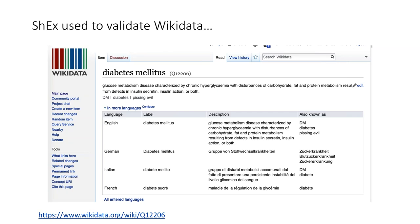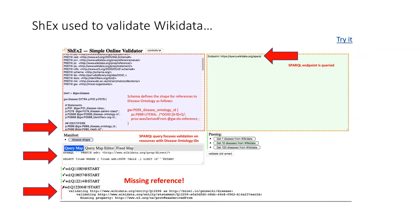Here is a screenshot from the online validator — clicking the 'try it' button takes you to this screen. It has a schema that defines the shape for references to the disease ontology and queries a SPARQL endpoint for the data. The SPARQL query focuses validation on resources with disease ontology IDs, and the data gets validated against the schema.